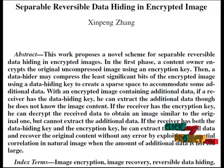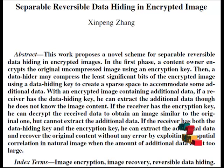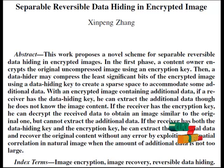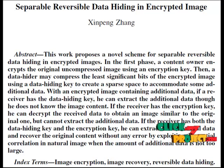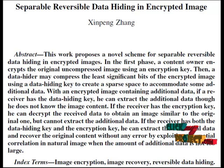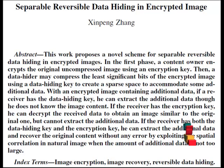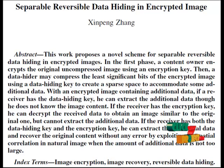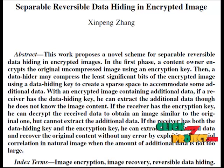If the receiver gets the encryption key, he decrypts the original received images to obtain an image similar to the original one, but cannot extract the additional data. If the receiver gets the data hiding key, he can extract the additional data, though he does not know the image content. If the receiver has both the data hiding key and encryption key, he can extract the additional data and recover the original content without any error by exploiting the spatial correlation in natural images when the amount of additional data is not too large.